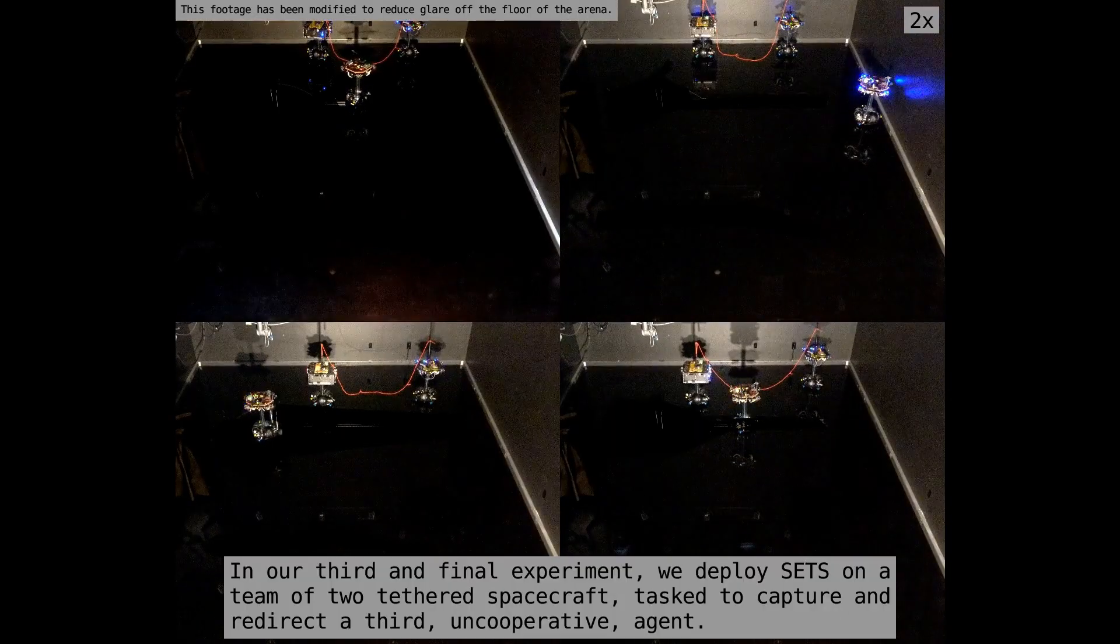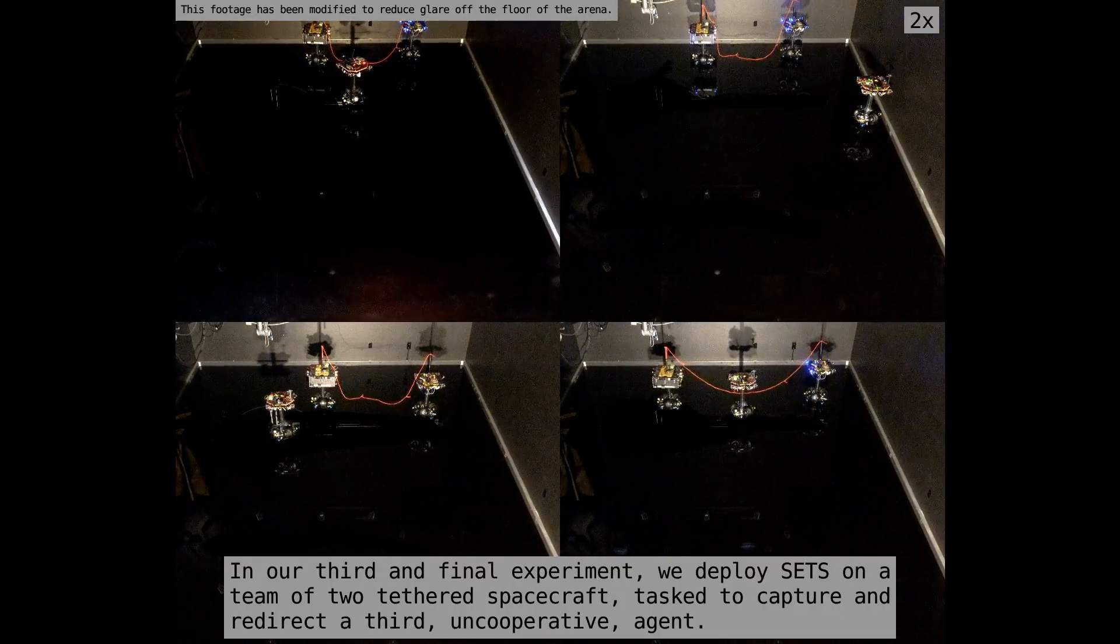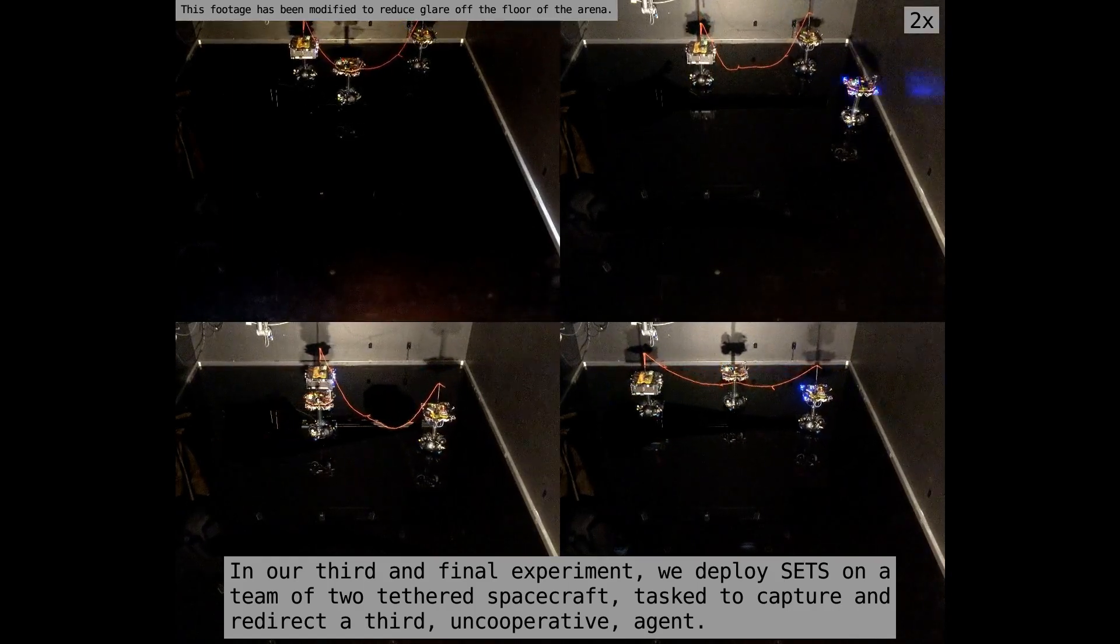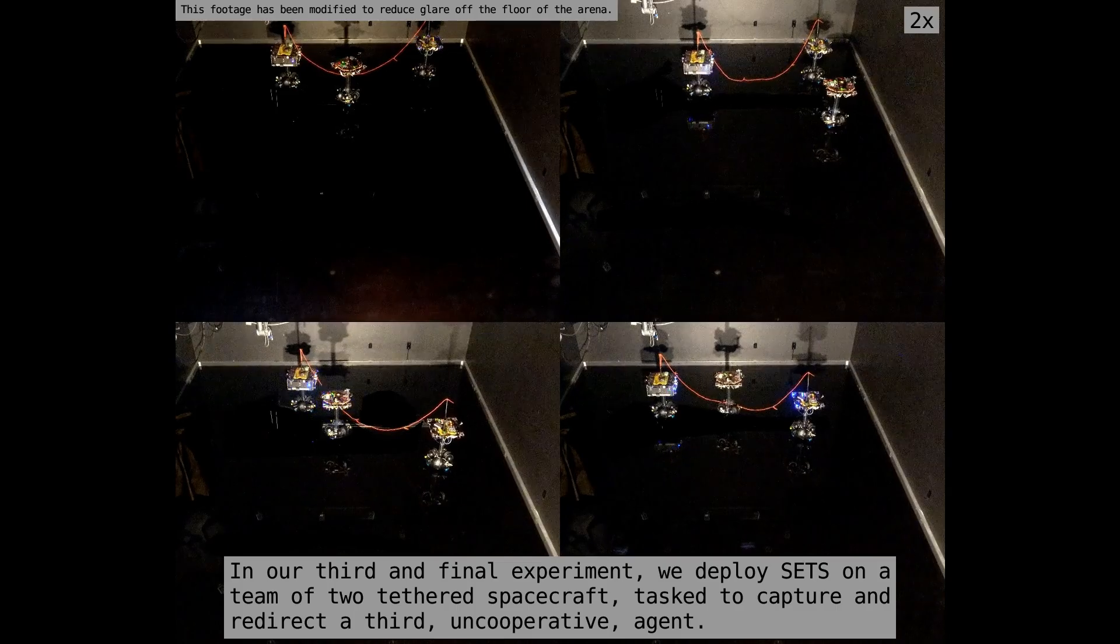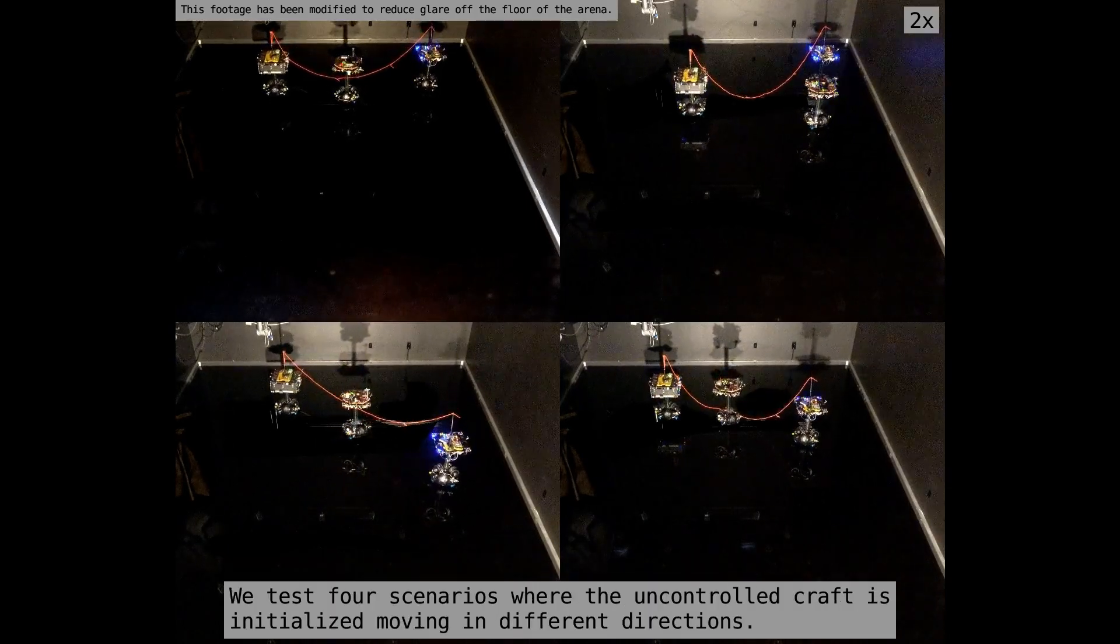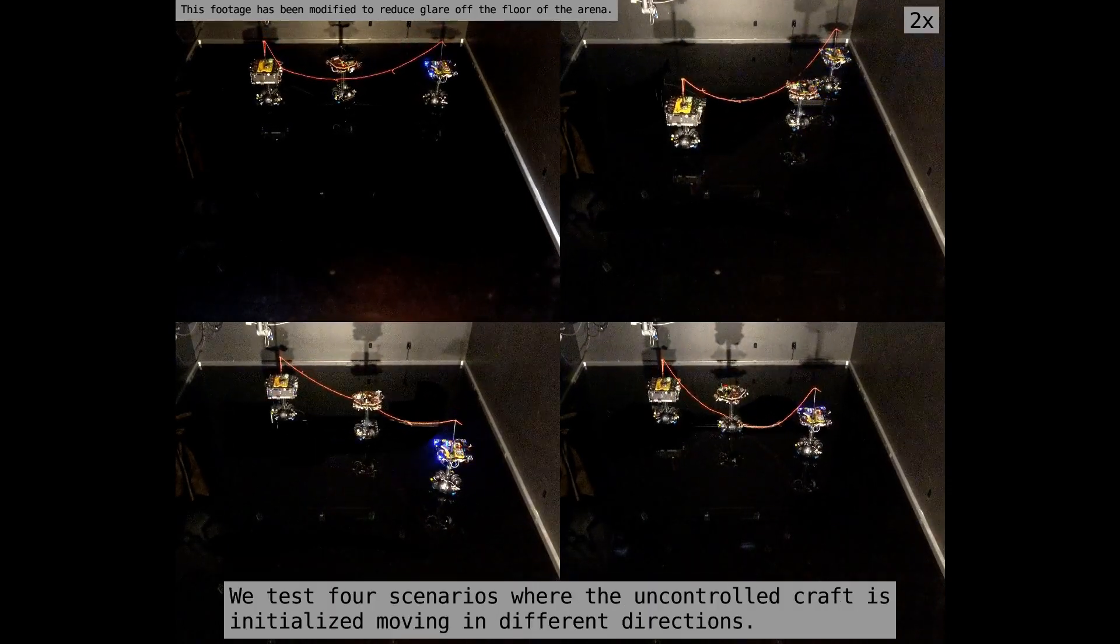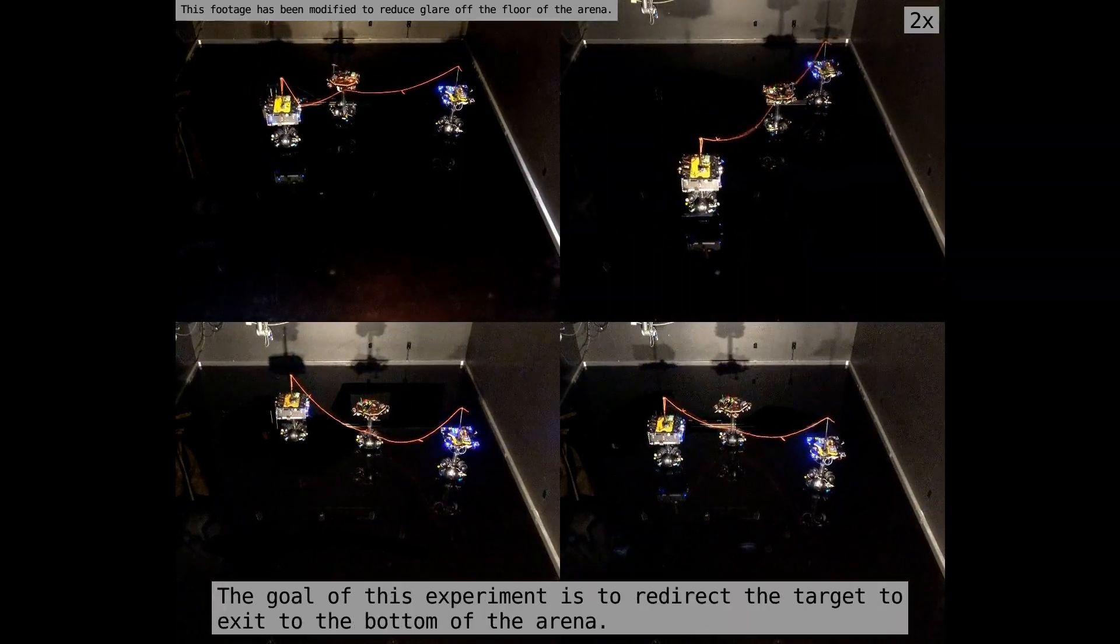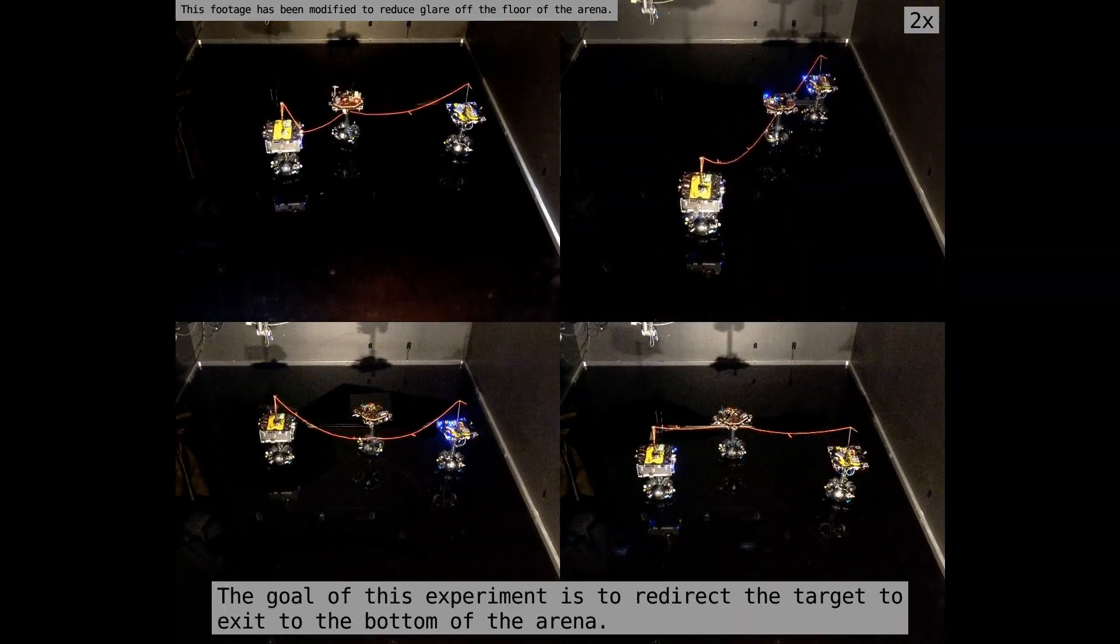In our third and final experiment, we deploy SETS on a team of two tethered spacecraft tasked to capture and redirect a third uncooperative agent. We test four scenarios where the uncontrolled craft is initialized moving in different directions. The goal of this experiment is to redirect the target to exit to the bottom of the arena.